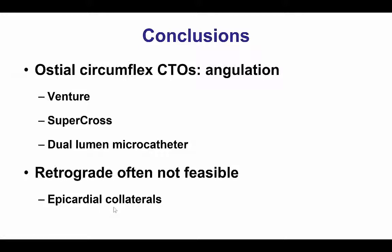This case shows some important facts regarding ostial circumflex CTOs. The first is that angulation is one of the key factors that need to be overcome, and one way to do this is by using an angled microcatheter such as the Venture, the Supercross 90-degree — the one used in this particular case — or alternatively a dual-lumen microcatheter such as a twin-pass torque. Antegrade crossing is particularly important for ostial circumflex CTOs because retrograde is often not an option, as the patient's collaterals are not conducive to the retrograde approach. Therefore, having those microcatheters and experience using them can be very useful for recanalizing ostial circumflex CTOs.